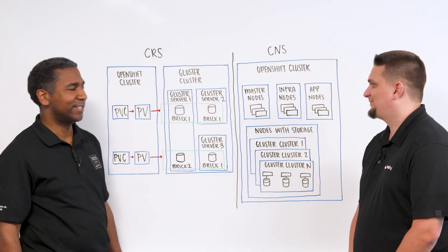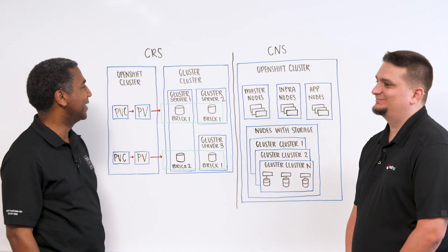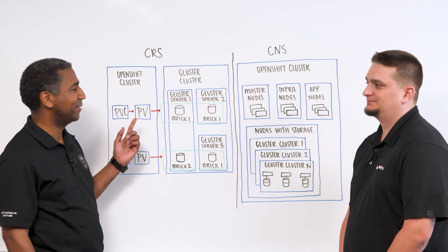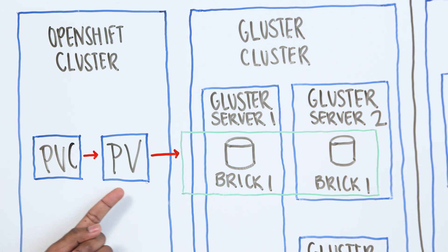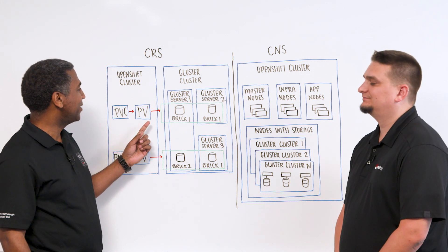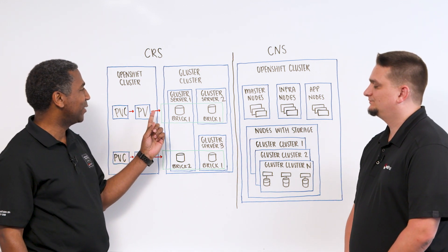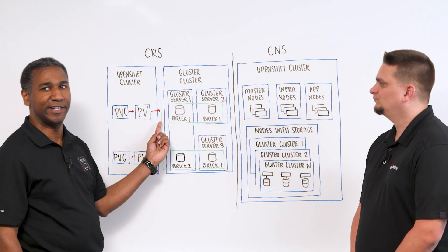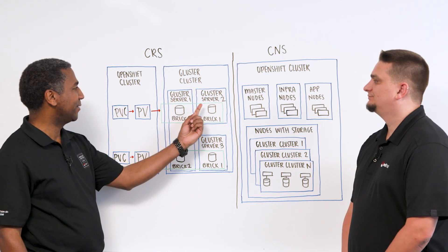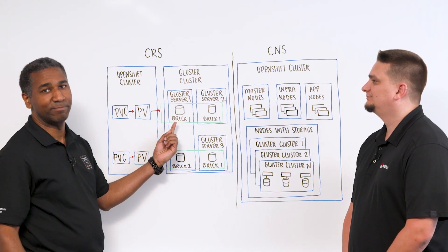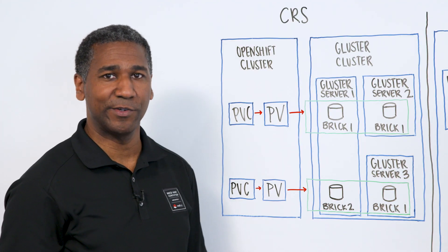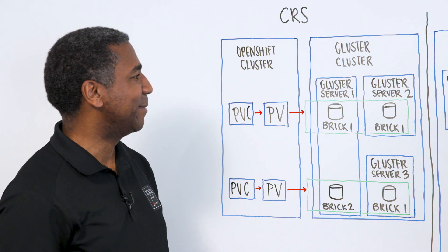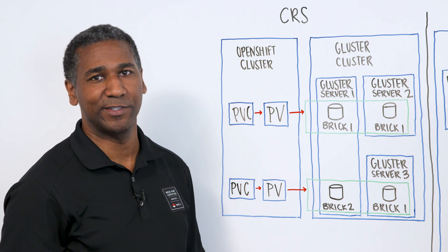The bottom line with container-ready storage is that your Gluster deployment is going to exist outside of your OpenShift cluster. As we can see here, our application has created a persistent volume claim, which is in turn associated with the persistent volume, which is dynamically created for us. That persistent volume is going to be associated with a Gluster volume, which is shown in green here. The Gluster volume is spanning multiple servers and multiple bricks, or disk drives, between those servers. The advantage this gives you is high availability of your storage, and it also eliminates any single point of failure within your storage solution.